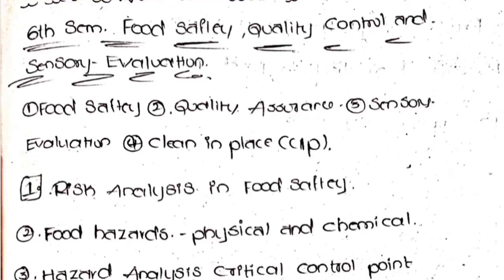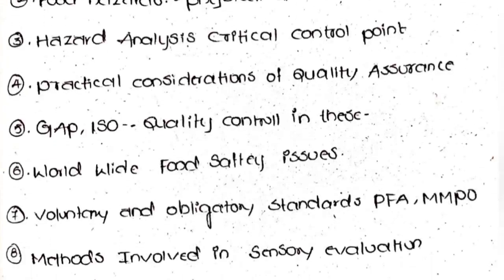The important questions are: first, risk analysis in food safety; second, food hazards — physical and chemical; third, hazard analysis critical control point (HACCP); fourth, practical considerations of quality assurance; fifth, GMP and ISO quality control; sixth, worldwide safety issues.